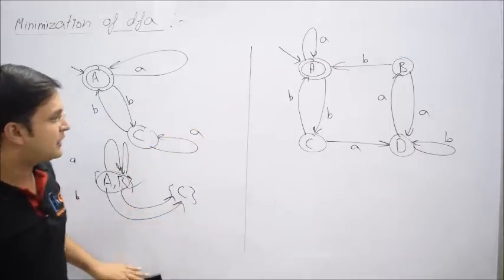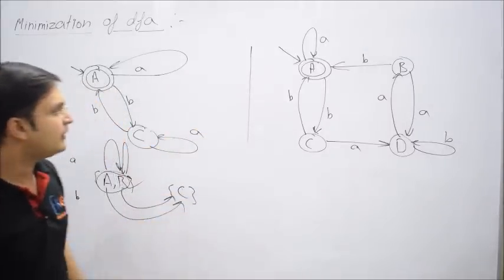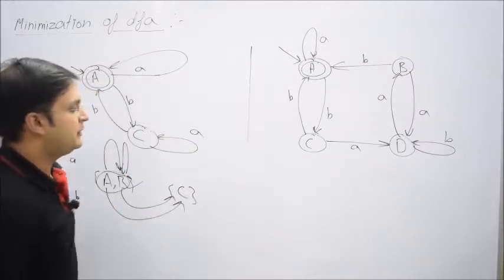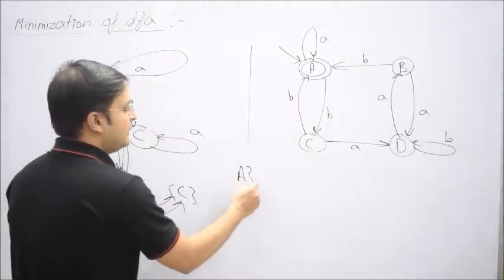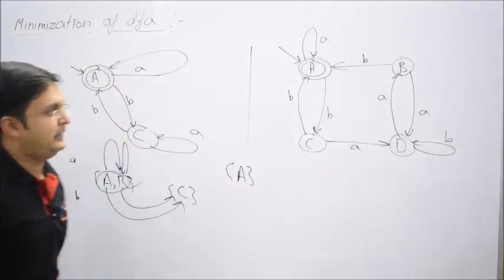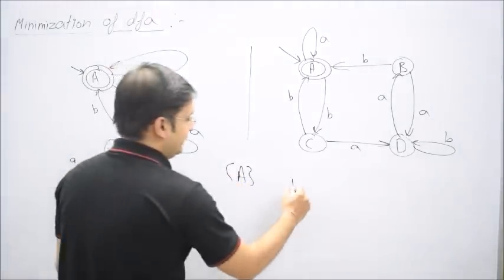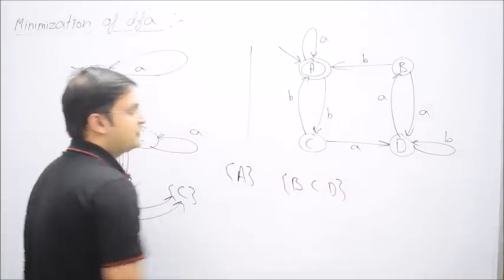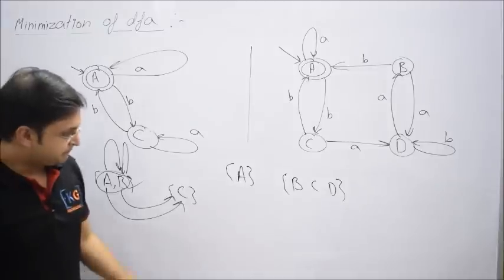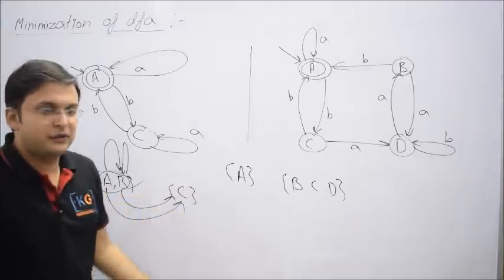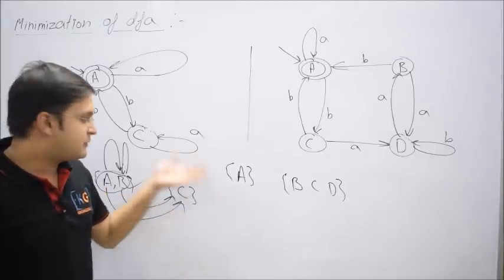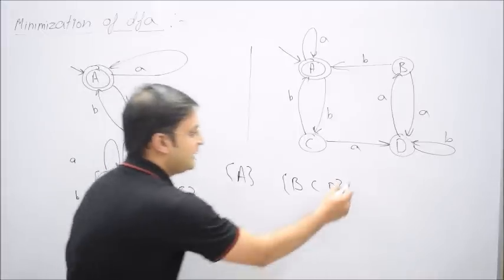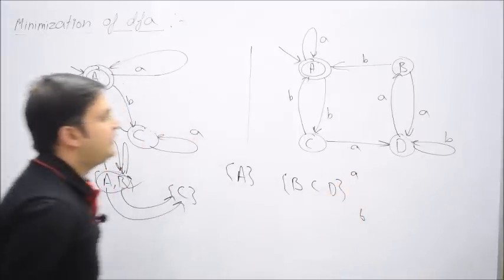Let's try one more question. Here only one state is taken to be final, so there will be only one state in the group of final states — that will be A. And three states are non-final: B, C, and D. The final group doesn't need optimization since it has only one state, but there could be splits in the non-final group. Let's check the behavior on both alphabets.